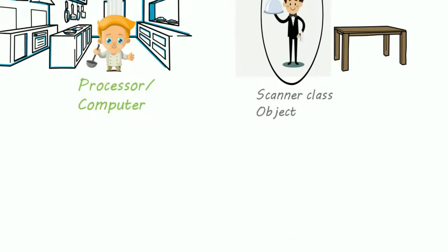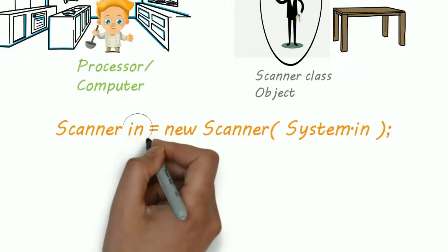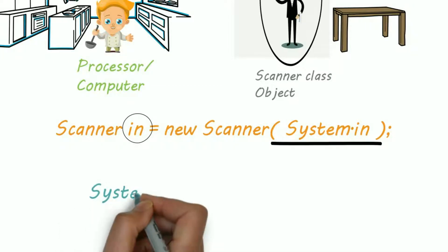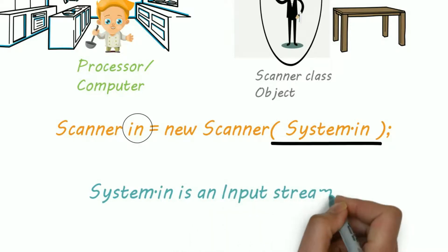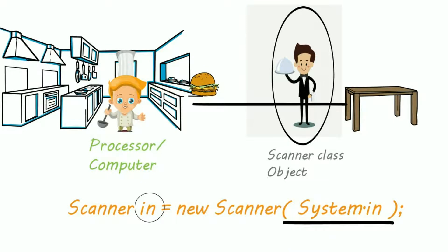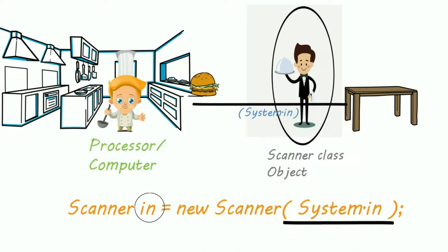So let's create a Scanner class object: Scanner in = new Scanner(System.in). Here I named my object as 'in', but you can name it anything. Now what is System.in? System.in is actually an input stream. Imagine this as the path between you and your food, because we need a path in Java, and that path is System.in.